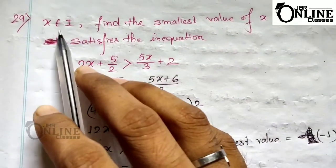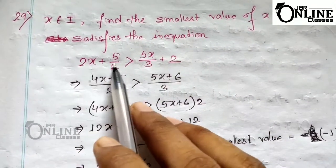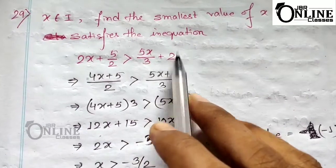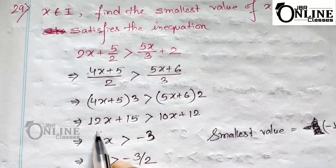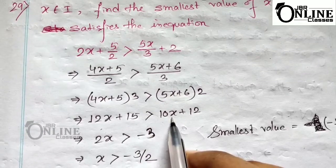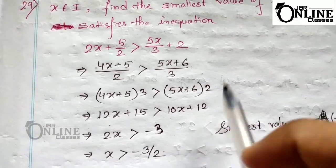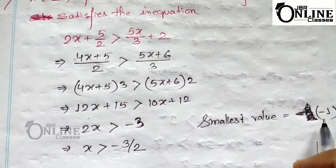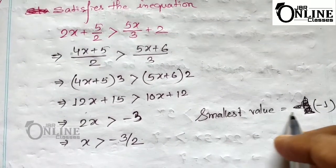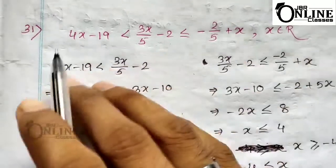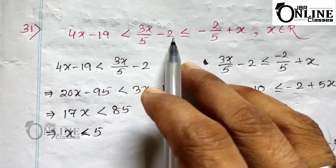Sum number 29: x ∈ I (integers). Find the smallest value of x satisfying 2x + 5/2 > 5x/3 + 2. By LCM, (4x + 5)/2 > (5x + 6)/3; by cross multiplication: 12x + 15 > 10x + 12, giving x > −3/2, which is x > −1.5. The smallest integer value of x is therefore −1.